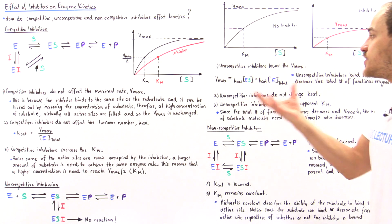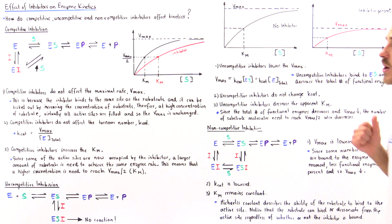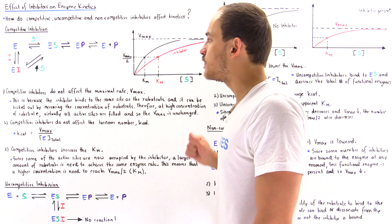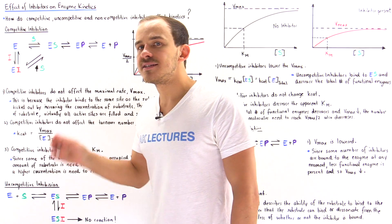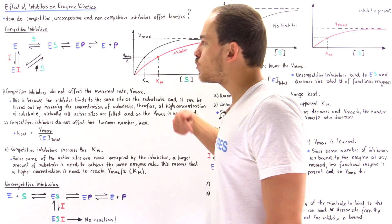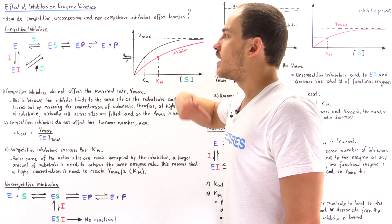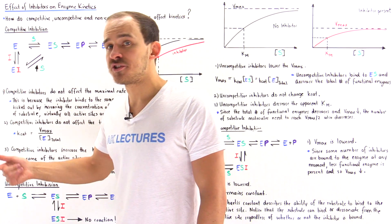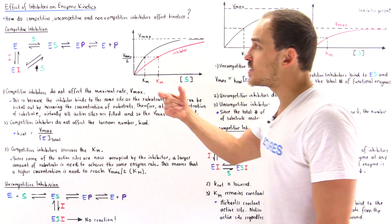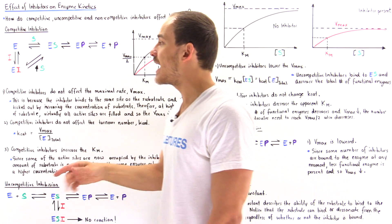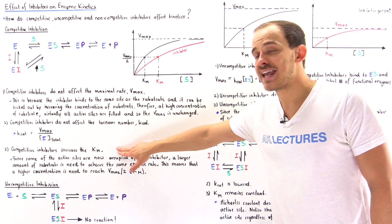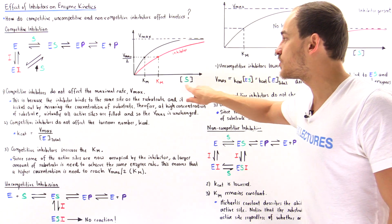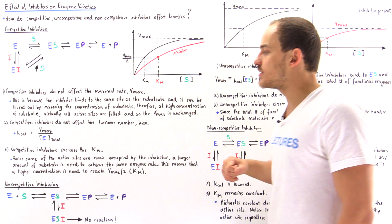So this is how these three reversible inhibition processes actually affect enzyme kinetics. In the case of competitive inhibition, we see that the Vmax does not actually change because we can ultimately overcome that inhibition by increasing the concentration of substrate. The K-Cat, the turnover number, doesn't change because the efficiency of the fully functional active site does not change. And the K-M value is increased because we require a higher concentration to reach the rate of Vmax divided by 2.